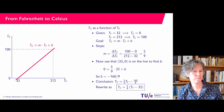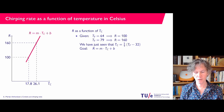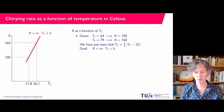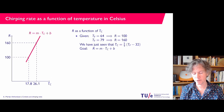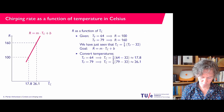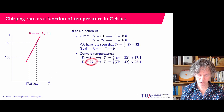So now, finally, what I would like to have is: if you know the temperature in Celsius, what is the corresponding chirping rate? So chirping rate as a function of temperature in Celsius. We had the data points in Fahrenheit, we know how to convert Fahrenheit to Celsius, and our goal is again to find a straight line R equals M times Tc plus B. First I'm going to convert the temperatures: 64°F converts to approximately 17.8°C, and 79°F converts to approximately 26.1°C.